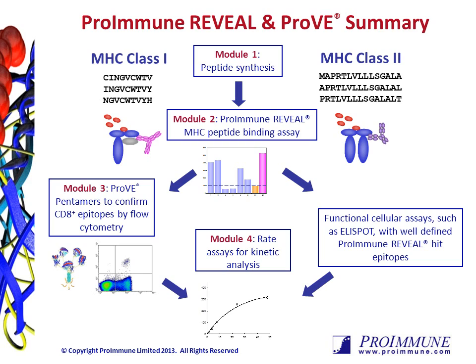For MHC class 1, there is the option to generate a panel of MHC pentamers from all HIT peptides identified — this is known as Module 3. These flow cytometry staining reagents can then be used to validate T cell epitopes, confirming the presence of antigen-specific T cells in your sample of interest. Furthermore, for both MHC class 1 and 2, we also provide our Module 4 rate assays, which enable a more stringent selection of HIT peptides based on their ability to stabilise the MHC complexes.